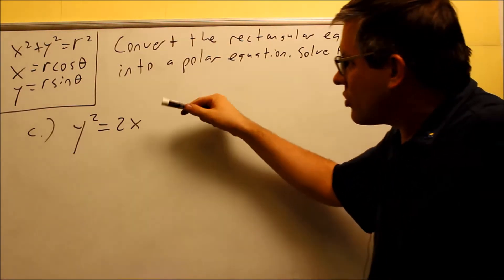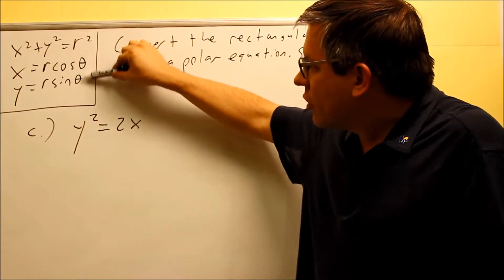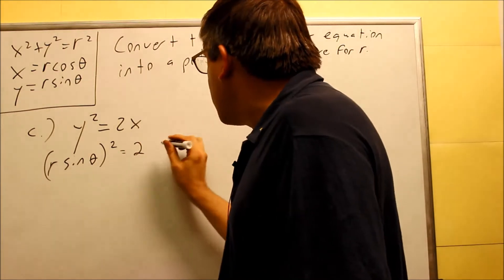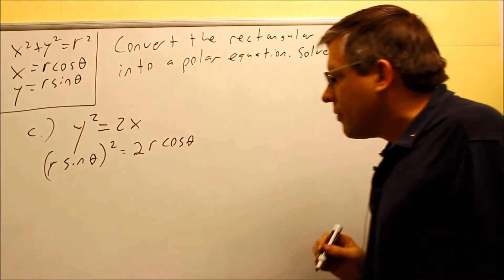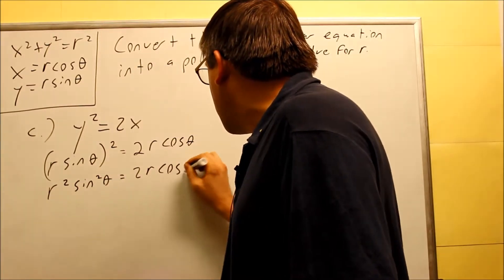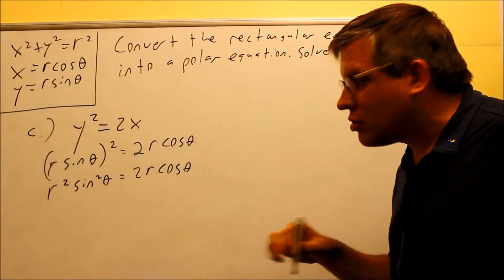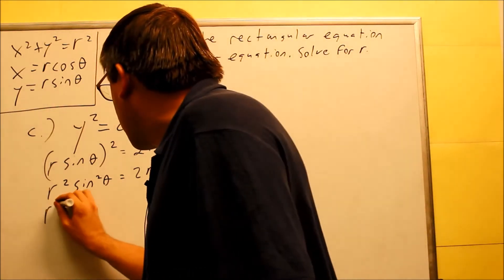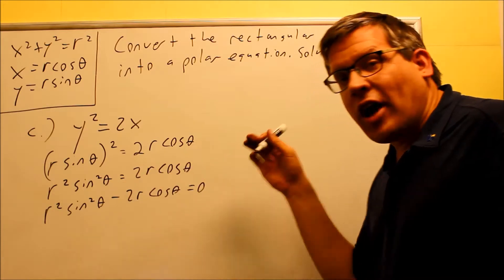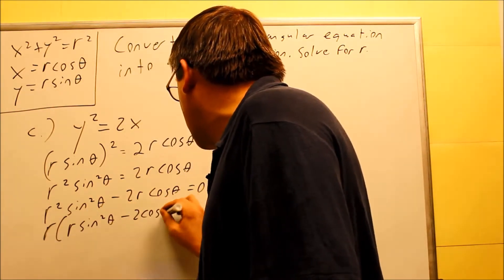For part C, we again look at what substitutions to use. Since y squared appears alone, not with x squared, we use the individual formulas. The y is replaced by r sine theta, which then gets squared. The x is replaced by r cosine theta. Squaring gives r squared sine squared theta equals 2r cosine theta. Following the correct procedure, we subtract and set it equal to zero: r squared sine squared theta minus 2r cosine theta equals zero. Factoring out r gives r times the quantity r sine squared theta minus 2 cosine theta equals zero.